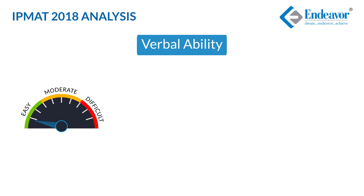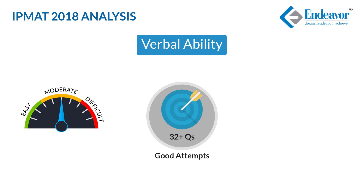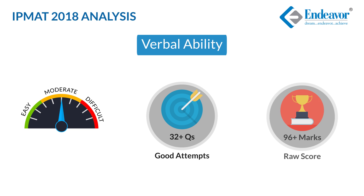Overall, the Verbal Ability section can be considered moderate and definitely not easy. Compared with last year, the section was slightly more difficult. A good attempt would be 32 plus, and a net score of 24 plus correct, or a raw score of 96 plus, can be considered good for this section.